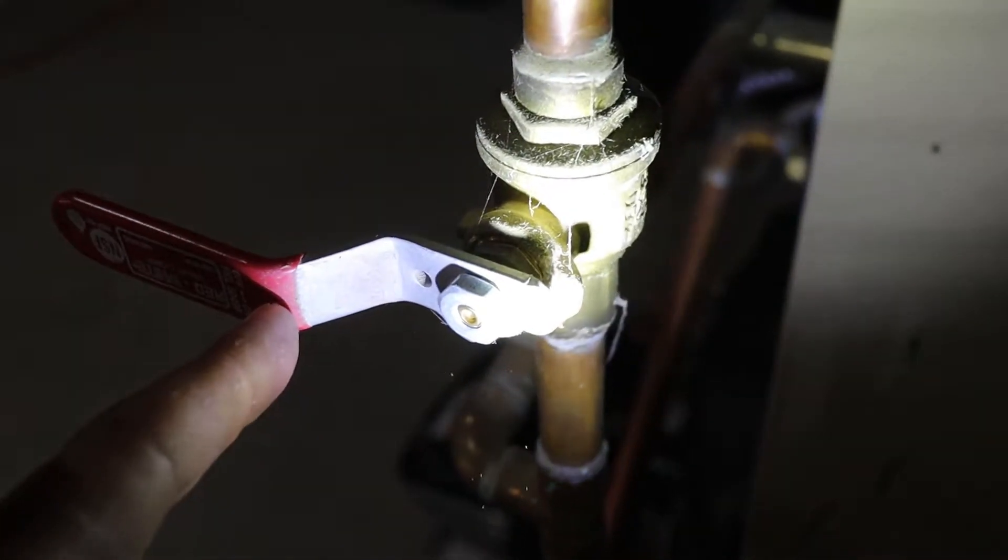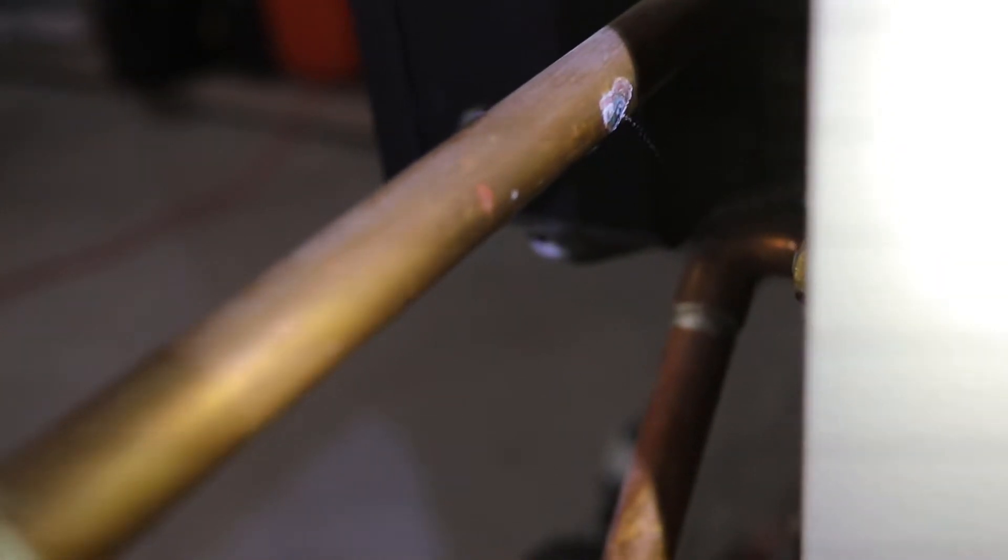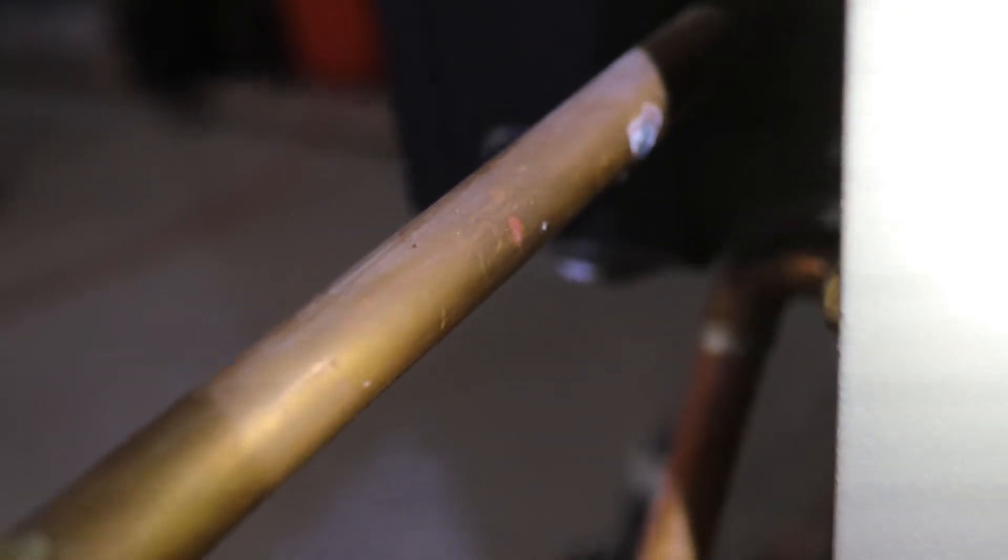I've shut off the water supply to the furnace for now so that there's no pressure in the system. Hopefully the camera is focused well enough there and I've got enough light so you can see the corroded section of the pipe.